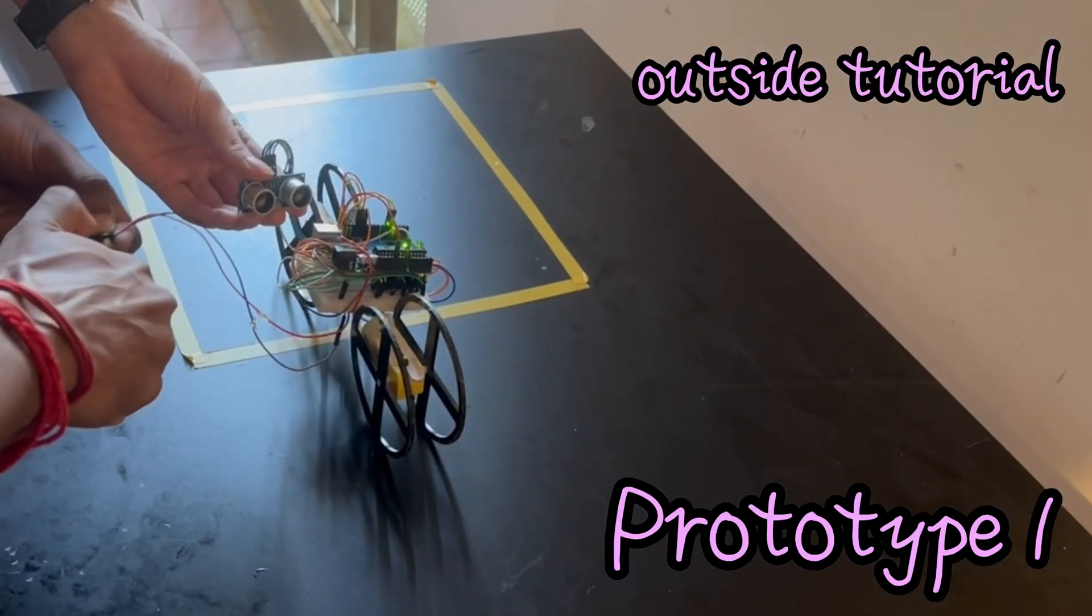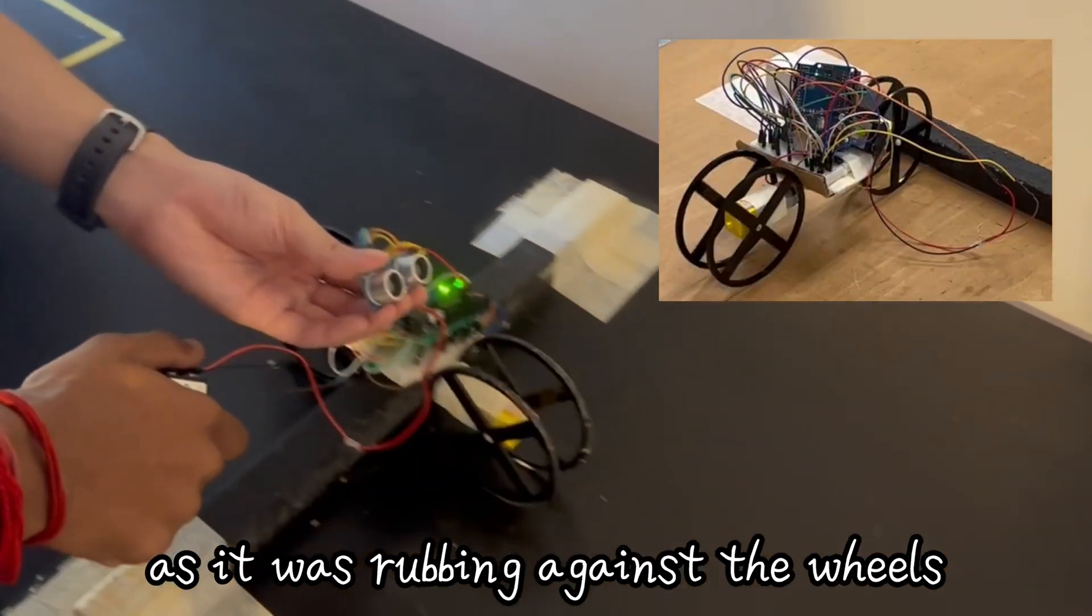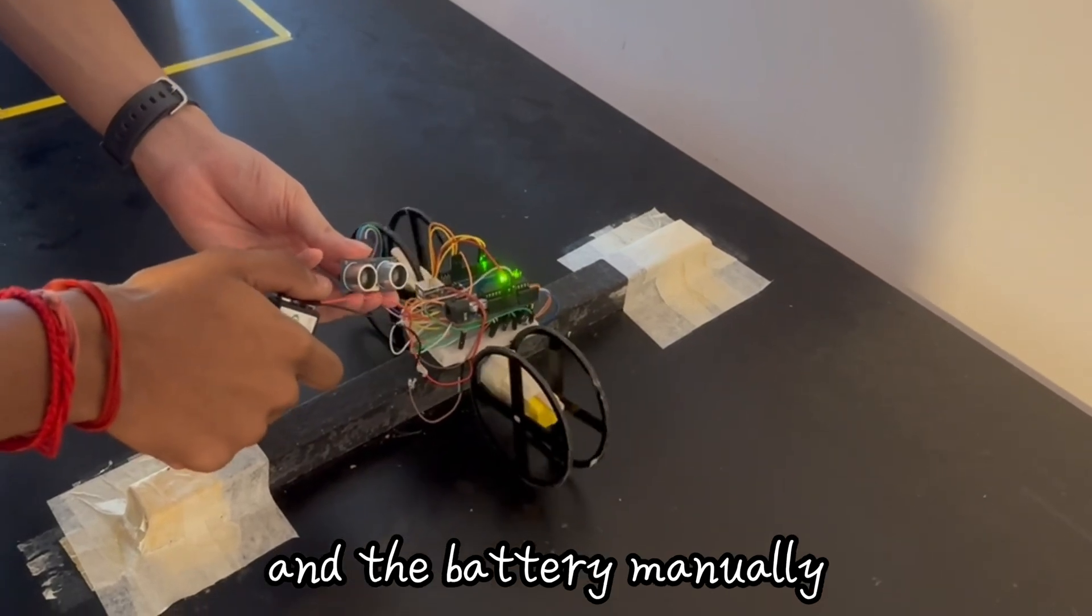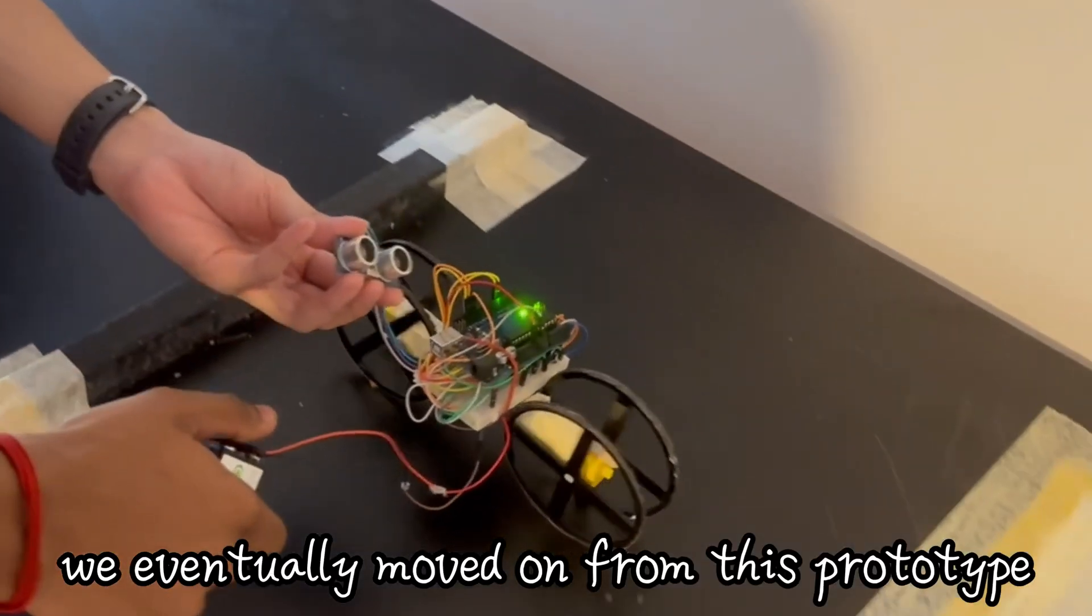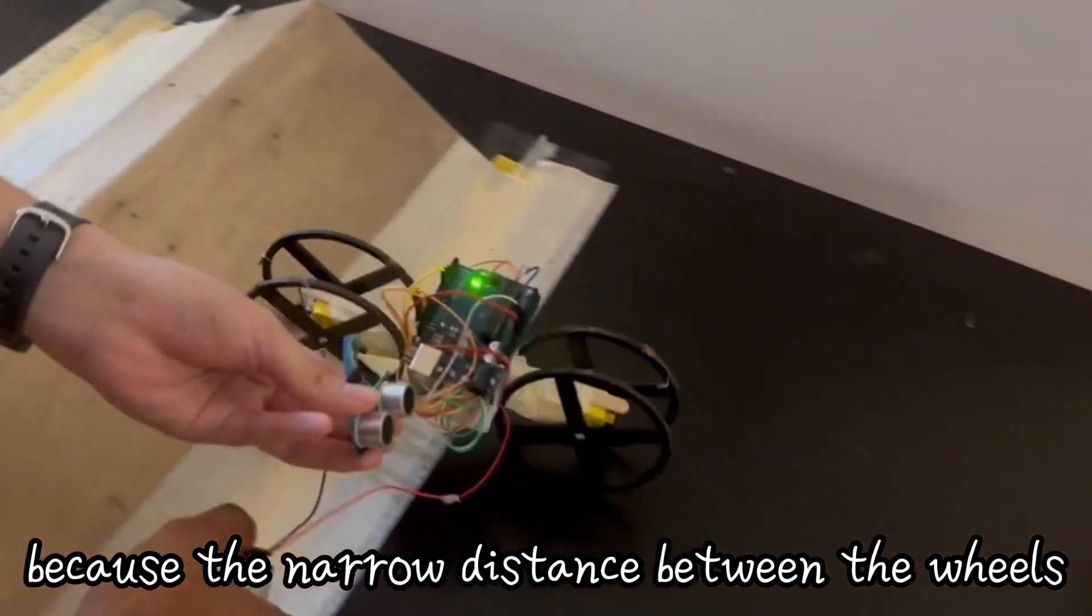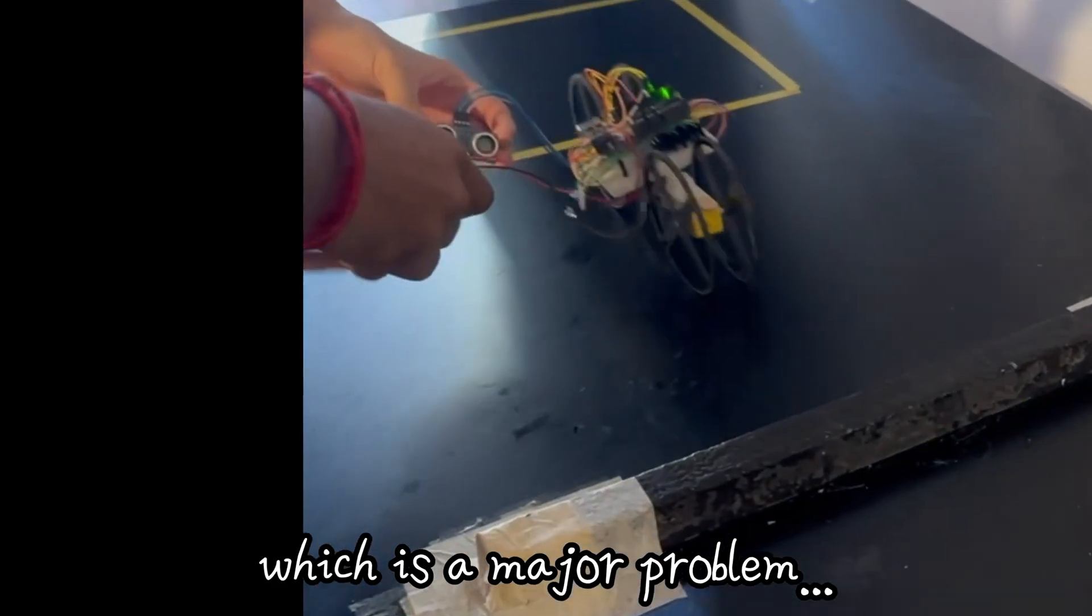Continuing our prototype outside of tutorial, we removed the cardboard chassis as it was rubbing against the wheels, but we now have to hold the sensor and the battery manually. We eventually moved on from this prototype because the narrow distance between the wheels made our robot fall on its sides easily, which is a major problem.